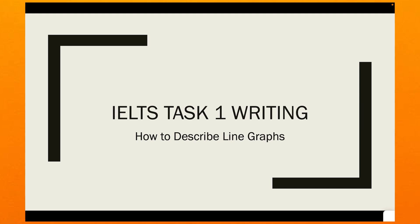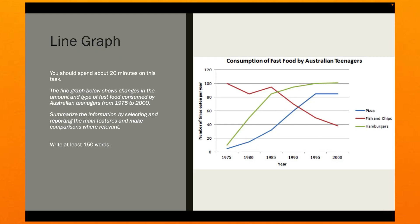Let's begin this video by looking at a typical line graph. Here's the line graph, and on the left you can see the instruction words. It says you should spend about 20 minutes on this task. The line graph below shows changes in the amount and type of fast food consumed by Australian teenagers from 1975 to 2000. You need to summarize the information by selecting and reporting the main features and make comparisons where relevant, and you need to write at least 150 words.